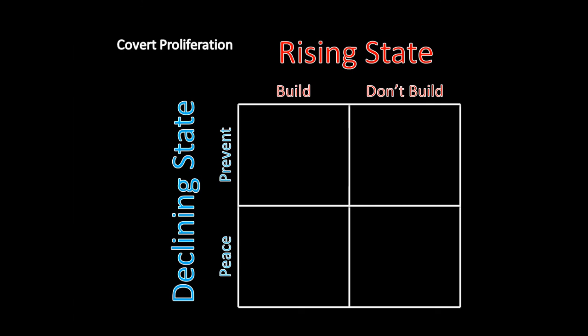This game has a different sort of solution compared to a Prisoner's Dilemma or a Stag Hunt. It's much more of a guessing game, where the declining state wants to guess whether the rising state is building a nuclear weapon. If it is building a nuclear weapon, it should want to prevent; and if it's not building one, it would be kind of ridiculous for the declining state to launch a preventive war against an arms program that isn't actually happening, so it would want to keep the peace.